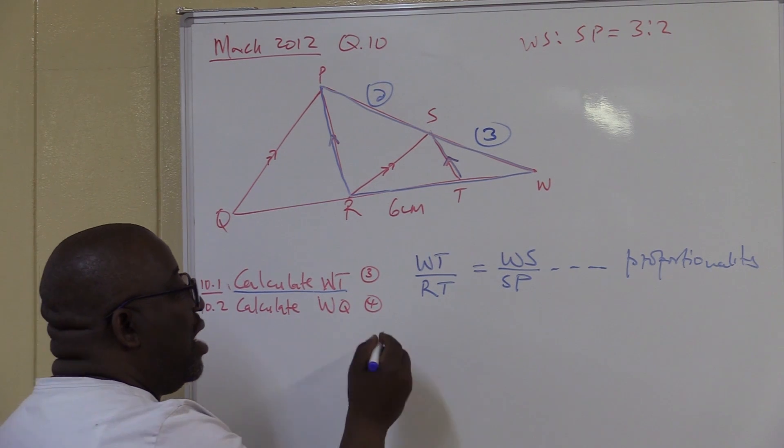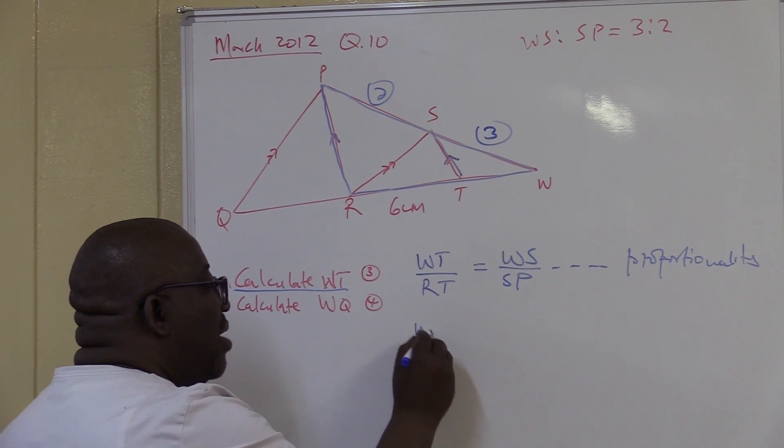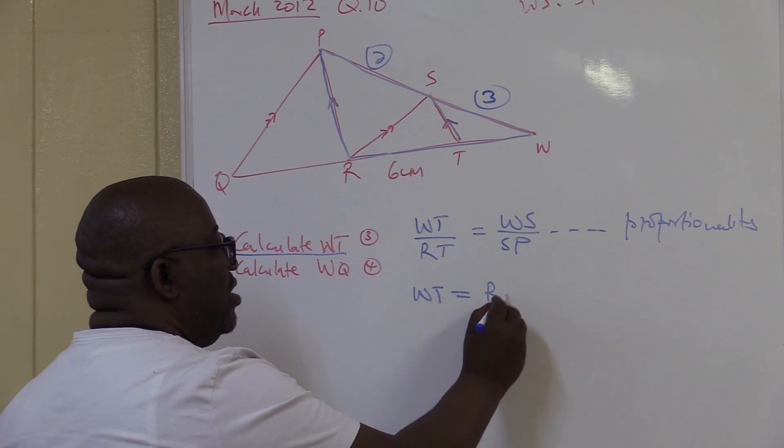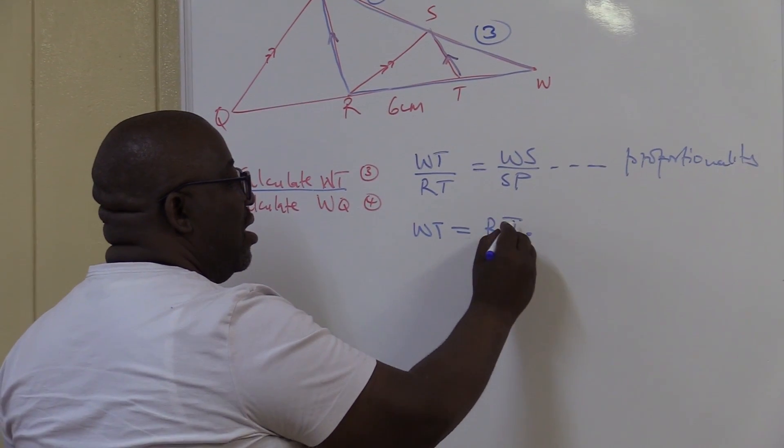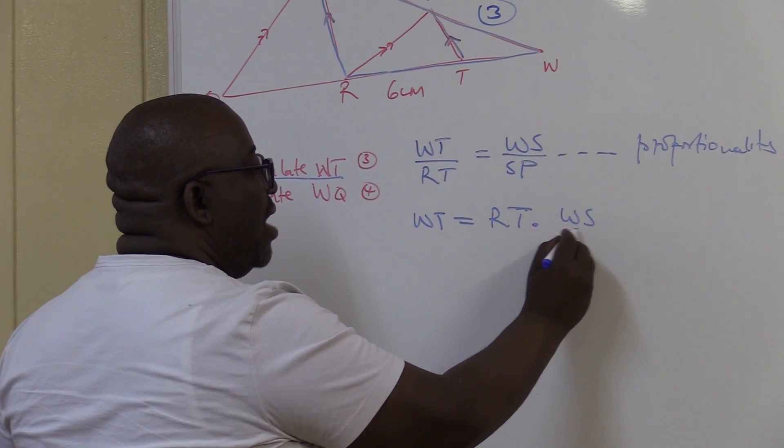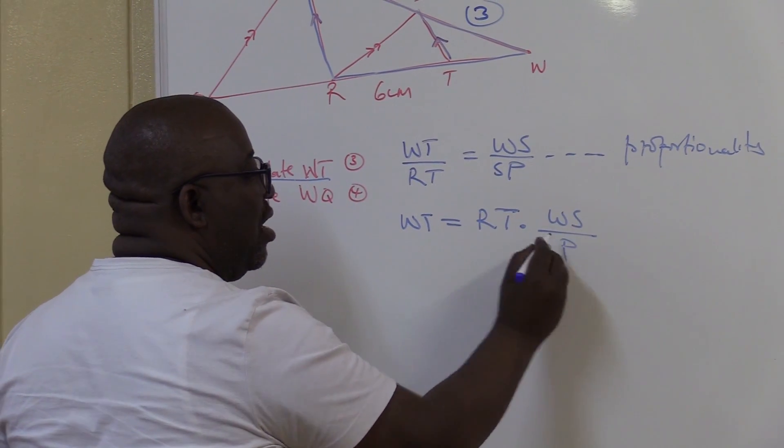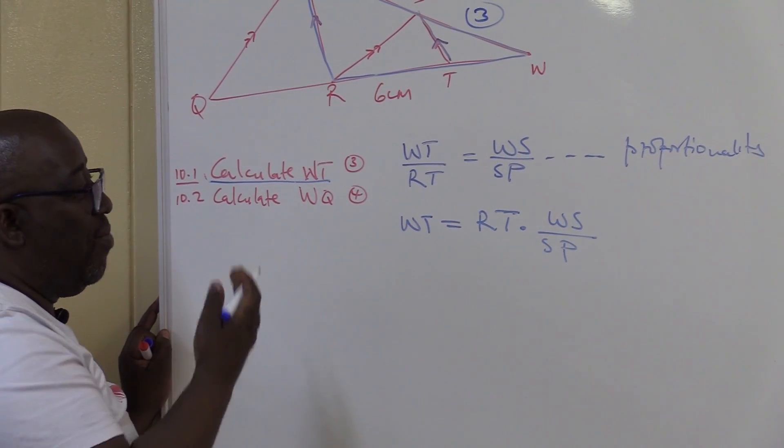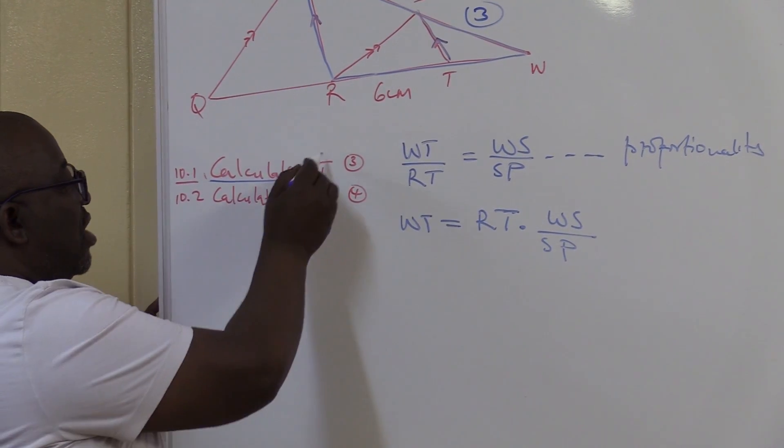That's why your grade 8, grade 9 comes in handy. So my WT will be equal to, cross-multiply, RT times WS over SP. I've just manipulated my formula and made WT the subject, because that's what I'm looking for.